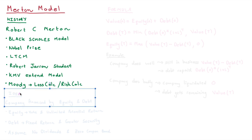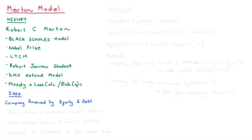The Merton model is built on the idea that a company is financed by both equity and debt. It's a structured model that uses the share price or equity of a firm to calculate the probability of default. Equity is when you buy a share — you get ownership, voting rights on the firm's strategy, and unlimited potential return. For example, a stock bought at $10 could go up indefinitely.